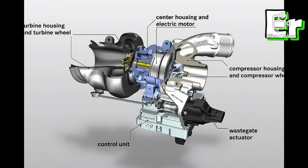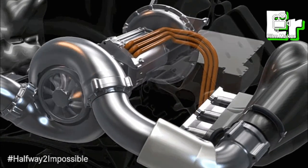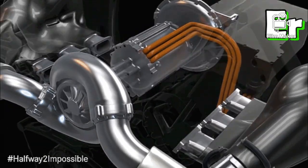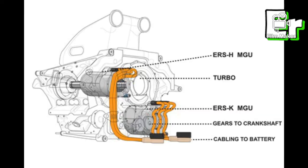This is how the Formula 1 turbocharger with MGU-H works. In the older turbocharger unit, the MGU-H was placed between the turbine and compressor units, as you can see in the picture. Combining the 1.6-liter V6 engine with the MGU-K and MGU-H makes the F1 car engine one of the most thermally efficient engines on the planet.